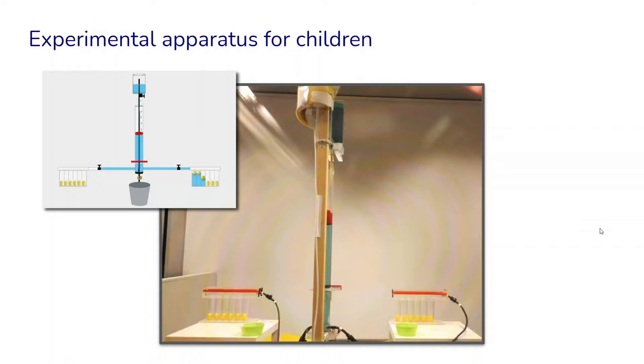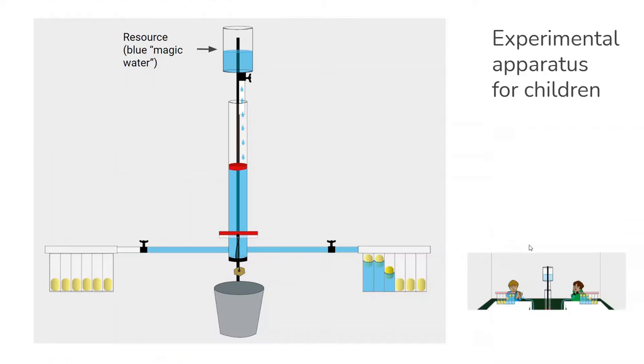This is what the experimental apparatus for children looked like. One child would be sitting here and another one here. So the experimental apparatus for children worked like this.